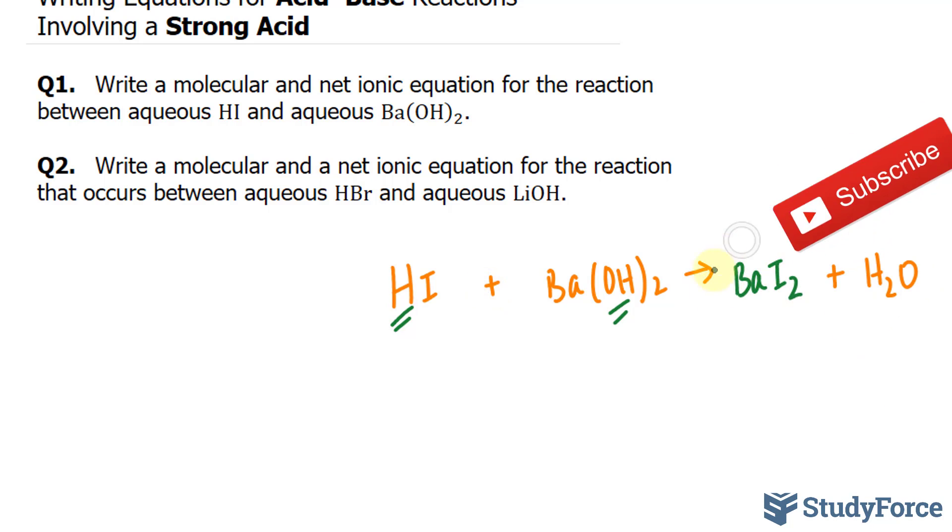Notice that I've replaced the salt with BaI2. Now we have to make sure that this is balanced. Let's find out. We have three hydrogens on the left side, one from here and two from here, and we have two on the right side. We have one iodine on the left side and two on the right side. So right from the get-go, the atoms are not balanced.